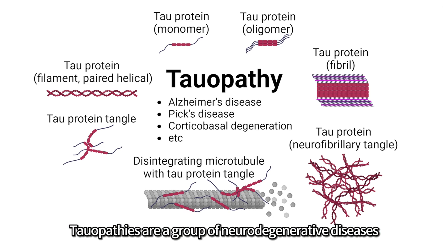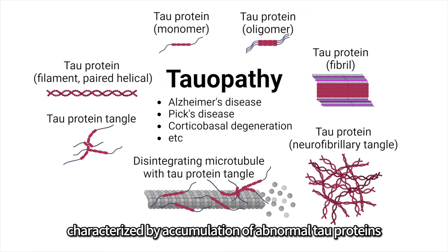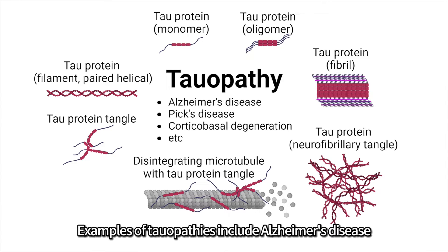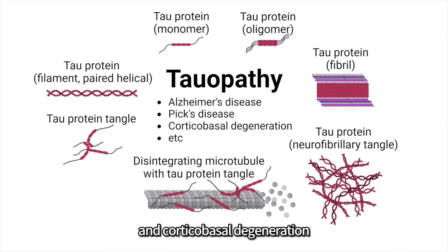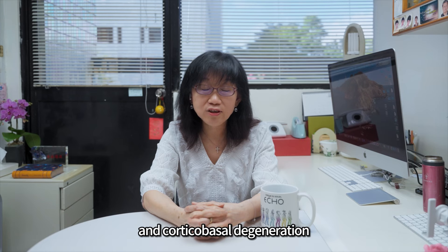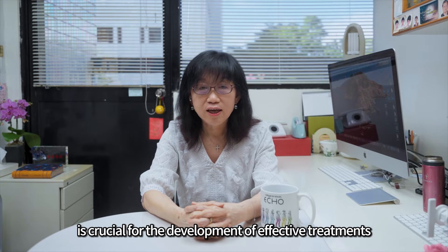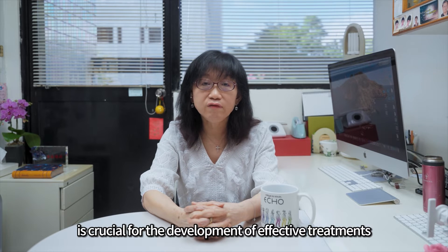Tauopathies are groups of neurodegenerative diseases characterized by accumulations of abnormal tau protein. Examples of tauopathy include Alzheimer's disease, Pick's disease, and corticobasal degeneration. Understanding these conditions is crucial for the development of effective treatment.